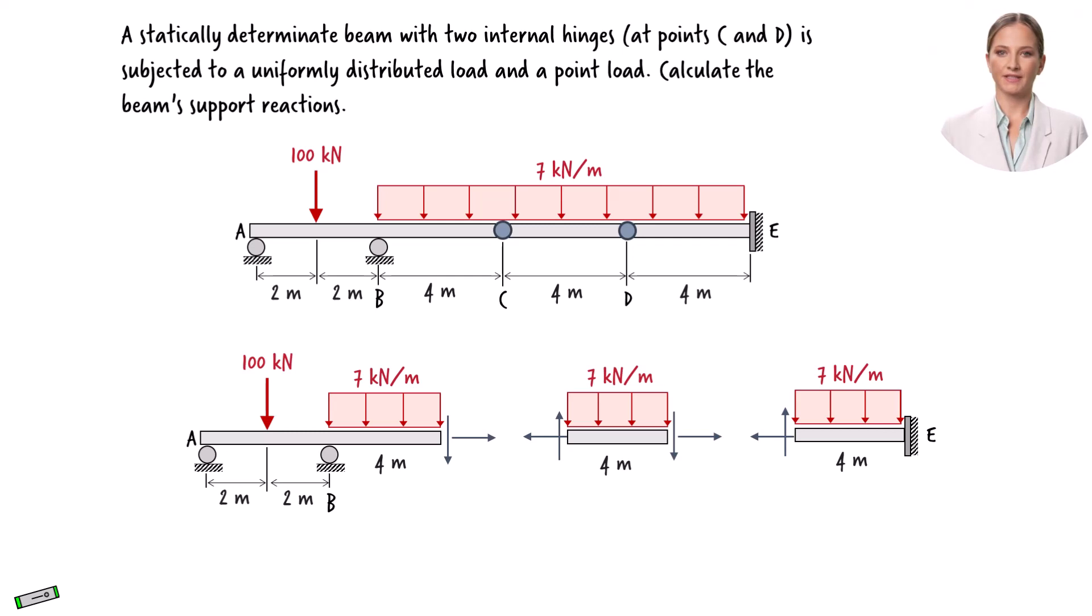Let's label the force magnitudes. For the left hinge, the axial force magnitude is denoted as Cx and the shear force as Vc. For the right hinge, the axial force is labeled dx and the shear force is represented by Vd.